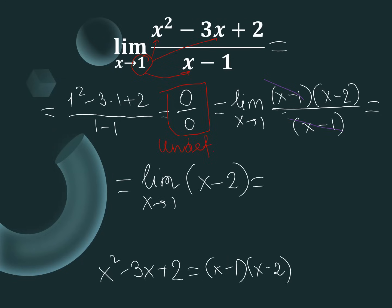Now we substitute x equals 1 into x minus 2: we get 1 minus 2, which is negative 1. Negative 1 is the correct answer for example 1 on your quiz.